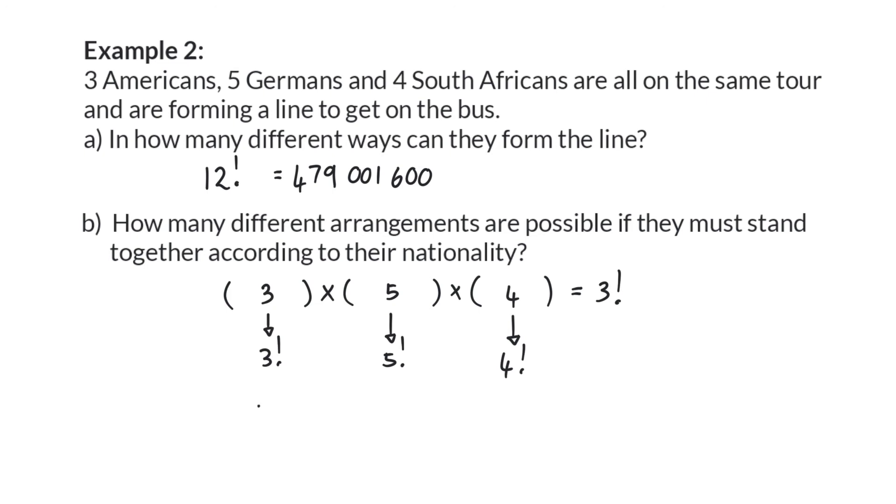Our final calculation will then be the original 3 factorial multiplied with the factorial for each of the different groups. And so from that original almost 500 million options there are now only 103,680 options left.